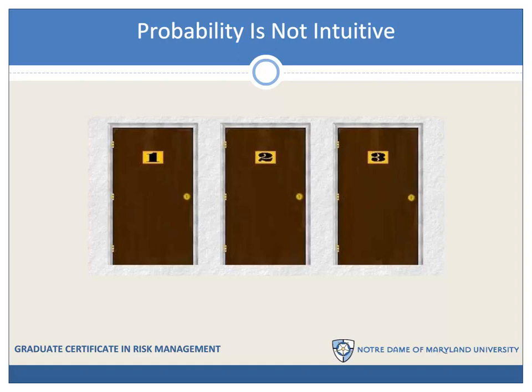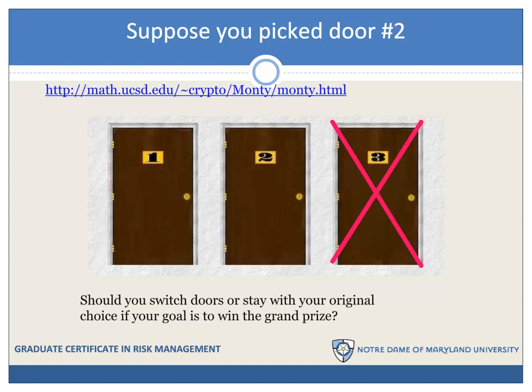So you're going to be a contestant on this show. We have three doors here. Choose one of these doors and tell me: what's the probability that you've chosen the right door? Let's suppose that you pick door number two. Now I'm the game show host and I know where the grand prize is and where the goats are — that is an essential piece of information. Because you have picked door number two, knowing the prize is not behind door number three, I open that and show it to you. Then I ask you if you would like to stay with door two or switch to door one. What would you say?